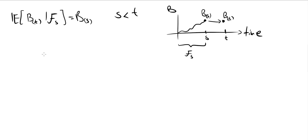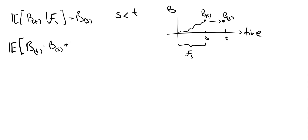Let's see how this is done by calculating it. We write the expectation of B_T, subtract B_S and bring it back again. All of this is conditioned on the filtration F_S.